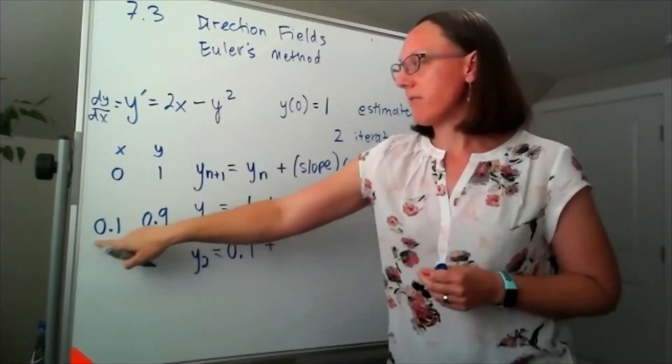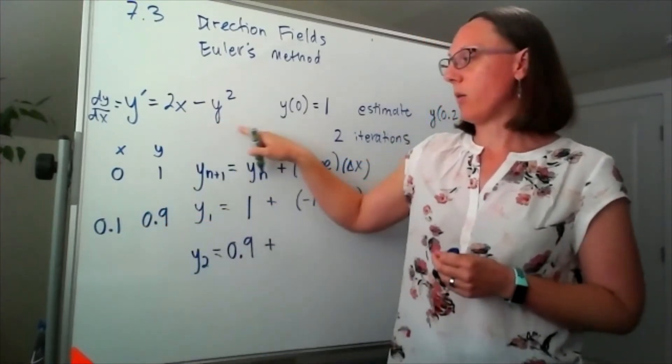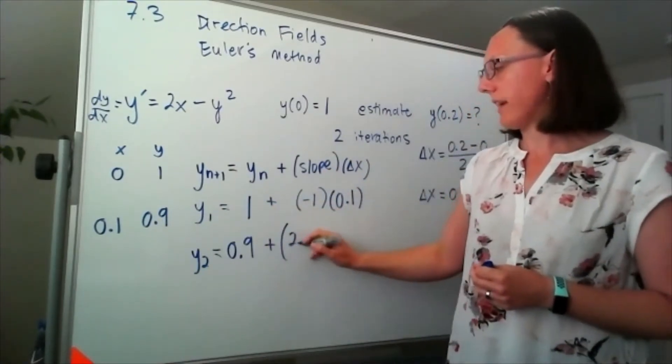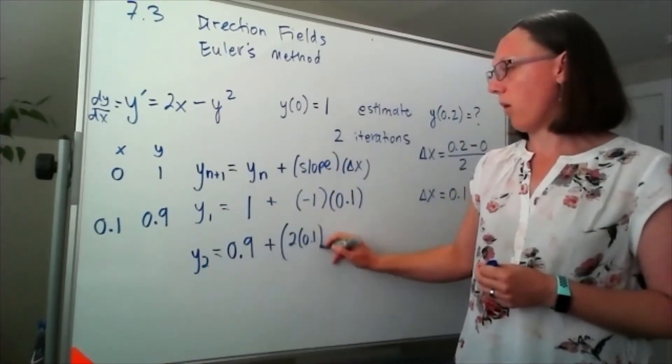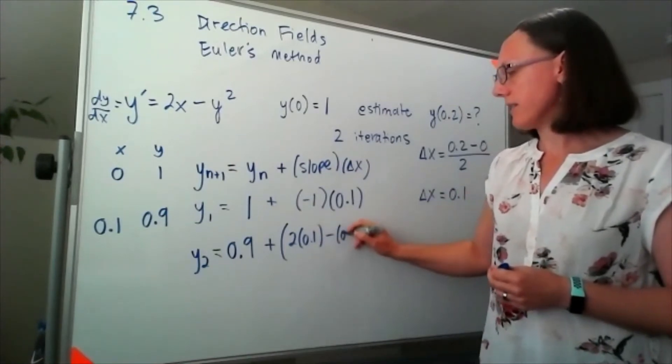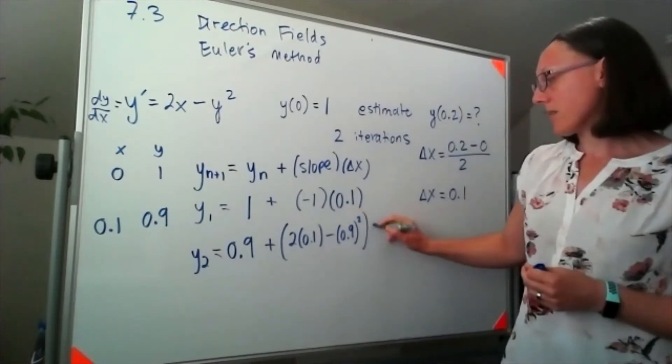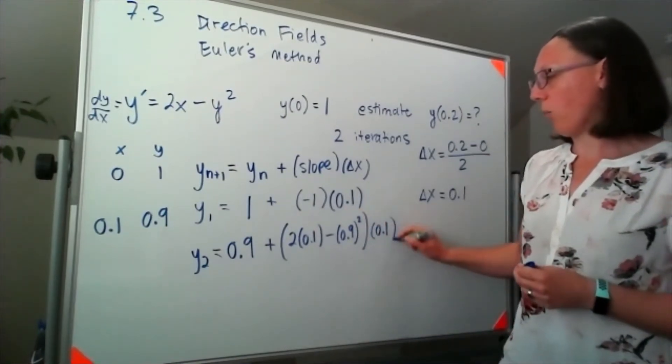So I'm standing at an x-value of 0.1 and a y-value of 0.9, so that slope is going to look like 2 times 0.1 minus 0.9 whole thing squared times our 0.1.